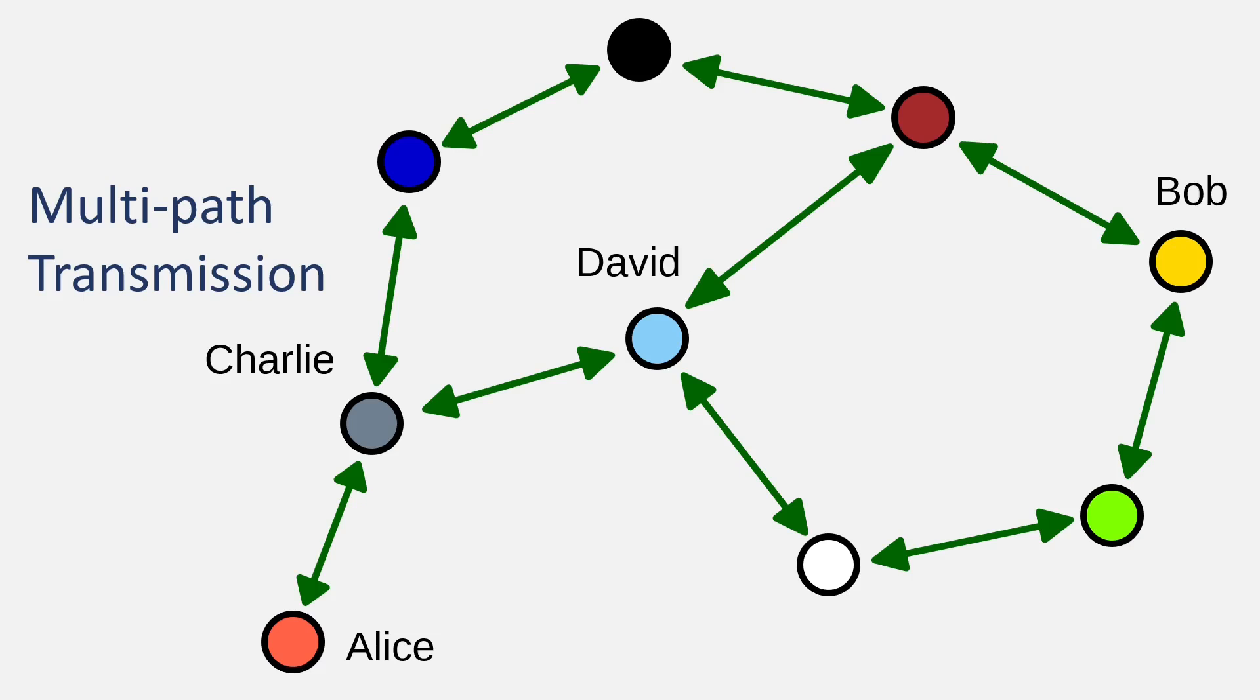For instance, Alice's message to Bob travels one route via Charlie, David, and Alan, while another copy moves through Charlie, Emma, and Frank. If one route fails, the other can still deliver the message.